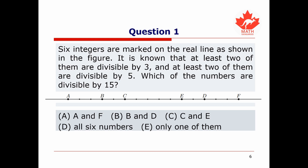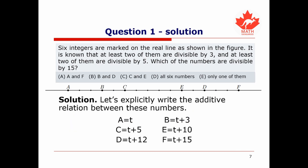We're now ready to look at the first question. Six integers are marked on the real line as shown in the figure. At least two of them are divisible by 3 and at least two are divisible by 5. We're asked to find which numbers are divisible by 15. Let's write the additive relation: let a equal t. Using the diagram, b is t plus 3, c is t plus 5, e is t plus 10, d is t plus 12, and f is t plus 15.